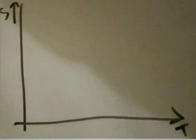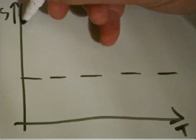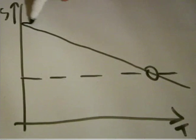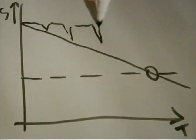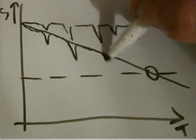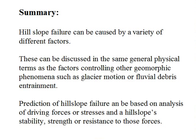Mass movements become likely when the critical threshold of stability is crossed by any combination of passive and transient events. We can draw a graph showing stability on the vertical axis against time on the bottom, and mark off a critical threshold of instability. Passive factors like slope weathering will lower stability gradually through time and may eventually reach the critical threshold. Simultaneously, transient events occur like rainfall events that in themselves may never be enough to reach the threshold, but in combination with the passive factors, there comes a time when one final straw breaks the camel's back. The threshold is crossed and instability may occur because of a combination of preparatory and triggering factors. Hill slope failure can therefore be caused by a variety of different factors, discussed in the same physical terms as other geomorphic phenomena. Prediction of hill slope failure can be based on analysis of driving forces or stresses, and a hill slope's stability, strength, or resistance to these forces.